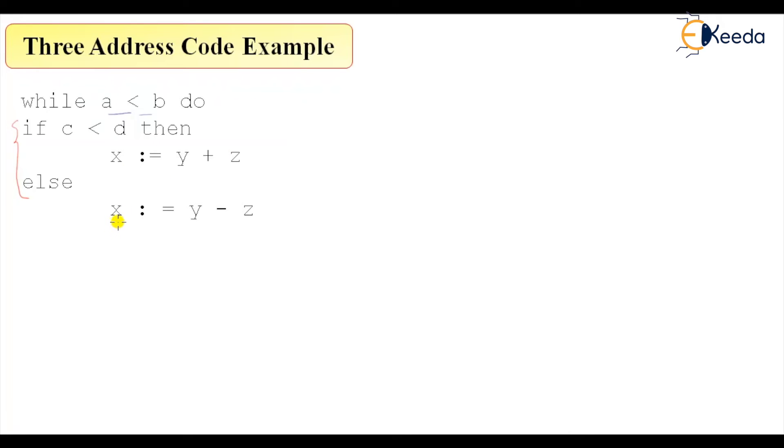Or x equal to y minus z. So now I have to execute this block again and again, and there is only one way we can execute this block by using this if relation operator. So if I'll say that if a less than b, if it is true, then I'll say go to L1.